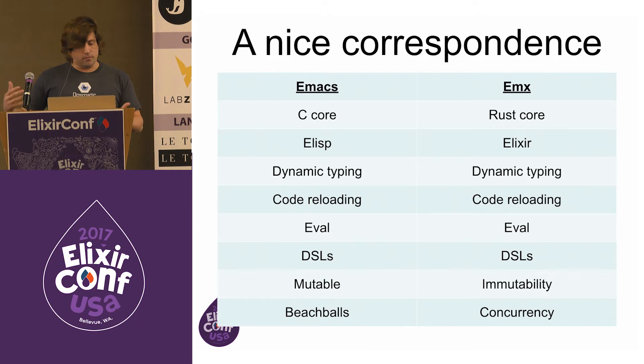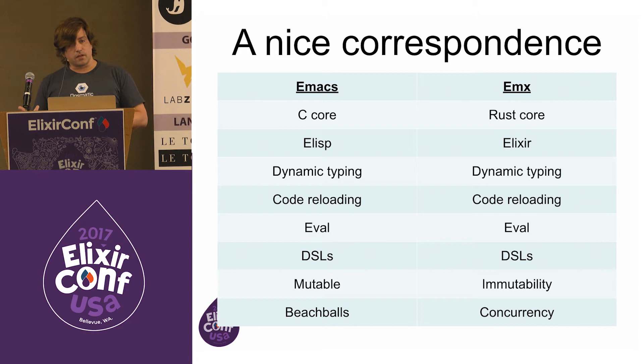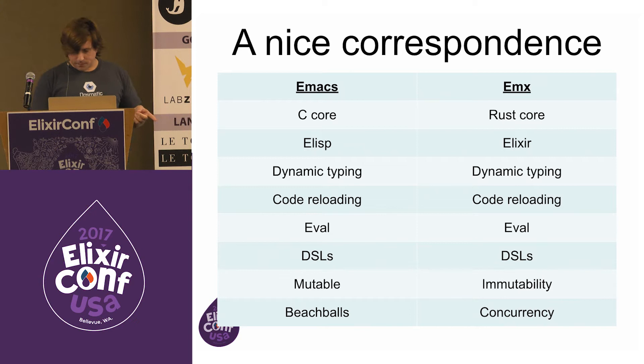Elixir has a nice correspondence with Emacs. Emacs has a C core — my project can have a Rust core. They have Emacs Lisp; we have Elixir. I heard once that José created Elixir because he wanted a palatable Lisp. Both have dynamic typing, both can do code reloading, we've got eval and DSLs on both sides. Where we get stronger: we've got immutability and concurrency, whereas they've got mutability and beach balls.